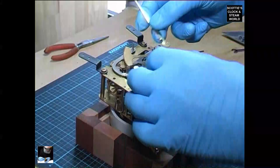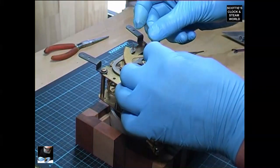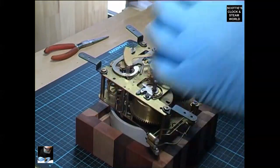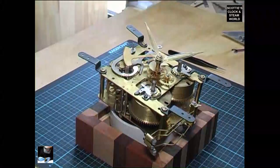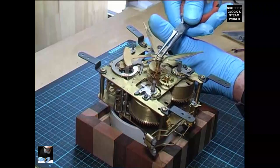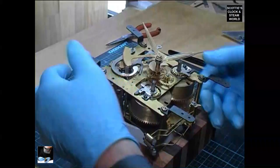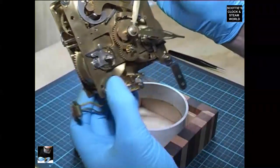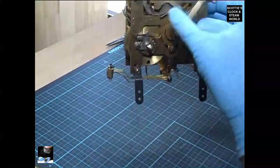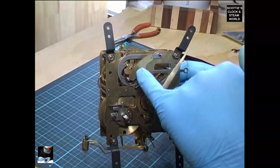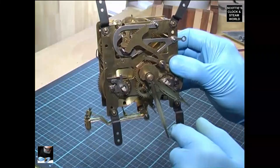And the minute hand. Nut on again, tighten it down. Now we'll turn the hands around, make sure that the rack up here drops. Half hour first, we'll drop once.